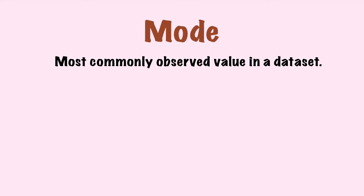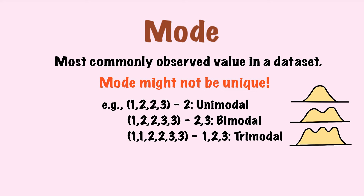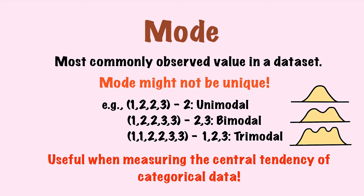Mode is the most commonly observed value in your data set. One thing to note is that the mode might not be unique — there can be many modes. For instance, if the data is 1, 2, 2, and 3, the mode is 2 since it appears twice while the other values appear only once. We call data with one mode unimodal, with two modes bimodal, and with three modes trimodal. Mode is useful when measuring the central tendency of categorical data, such as hair color, since it doesn't make sense to average categories or just order them.